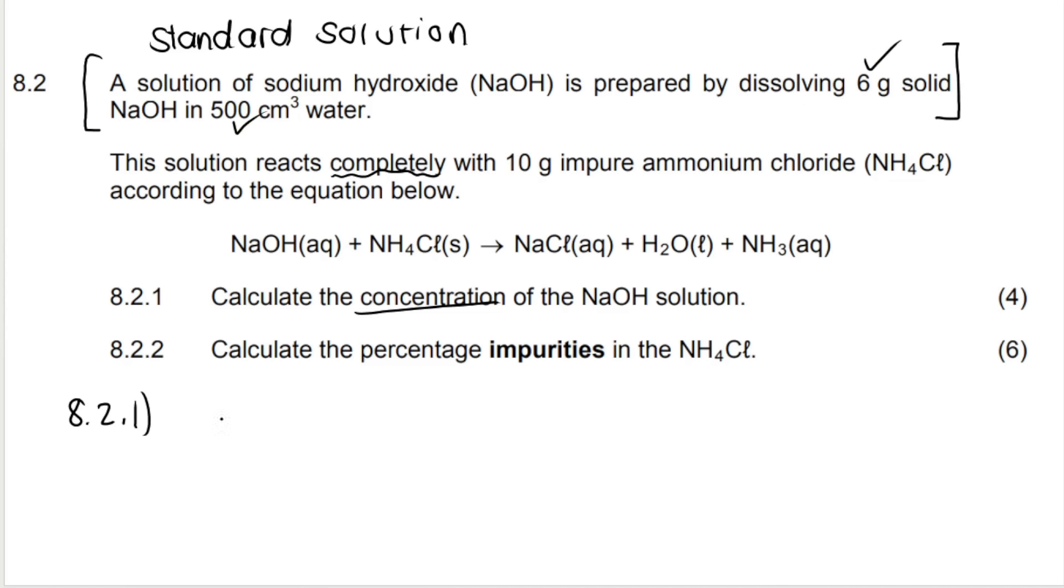Remember, to calculate concentration, we can either use this formula: concentration equals mass divided by molar mass multiplied by volume. Or we can use two separate formulas. One where we first calculate the number of moles using mass divided by molar mass, and then once we've got the moles, we use this formula for concentration. Basically, this formula on the left combines these two on the right. So I'll be using the one on the left for the purpose of this question.